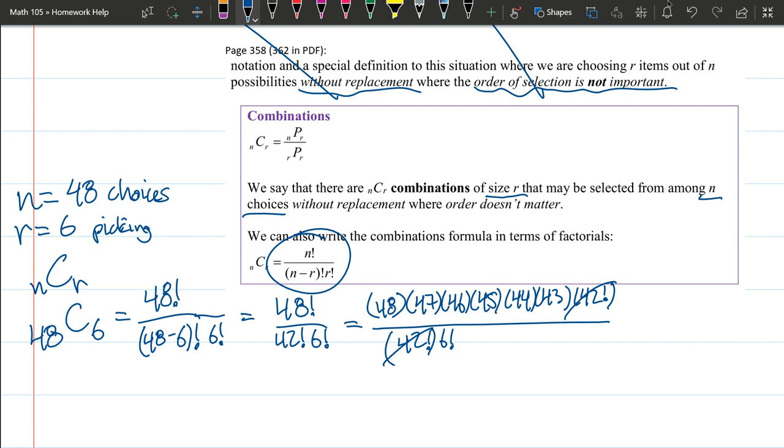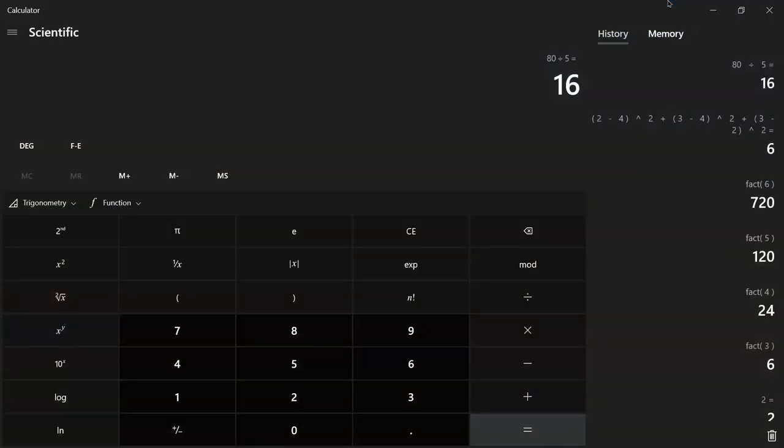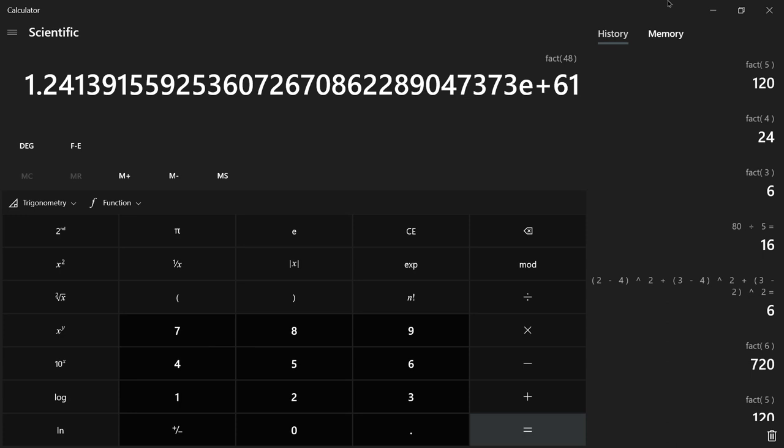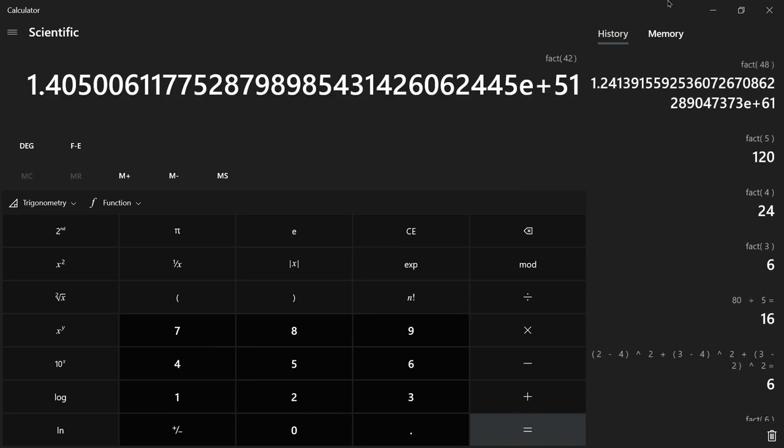Let's look at how to actually type these in. I'm using the regular calculator and the factorial, which is the exclamation point. Just to warn you, these numbers get really big really quick. 3 factorial is 6 because 3 times 2 times 1 is 6. 4 factorial is 24, 5 factorial is 120. If we go up to 48 factorial, that's a huge number. And 42 factorial is also a huge number. This e plus 51 means you have to move the decimal point to the right 51 times. These are massive numbers.